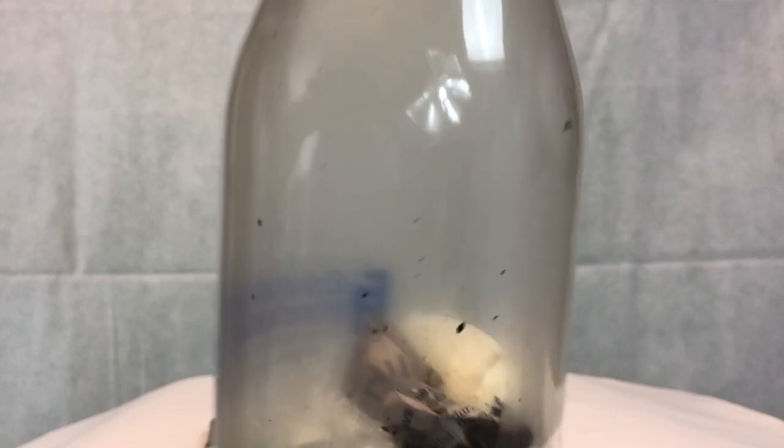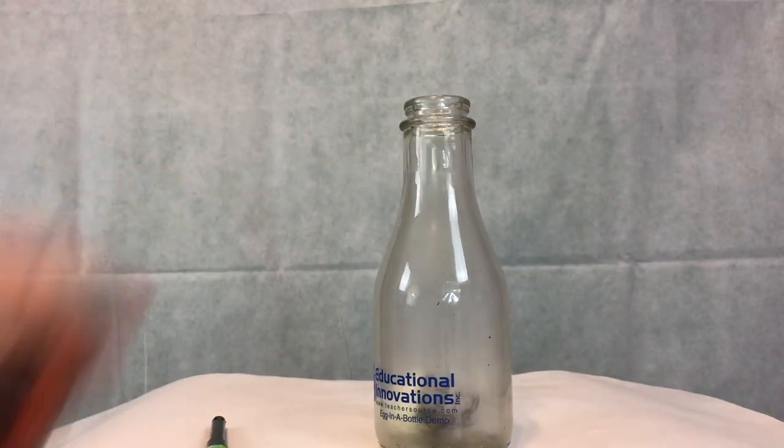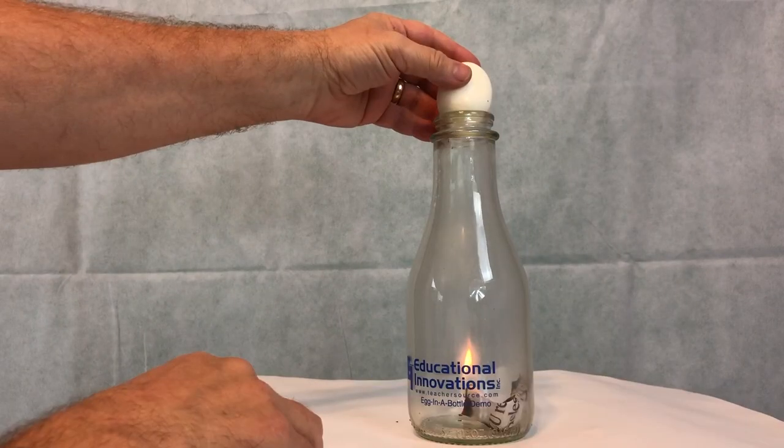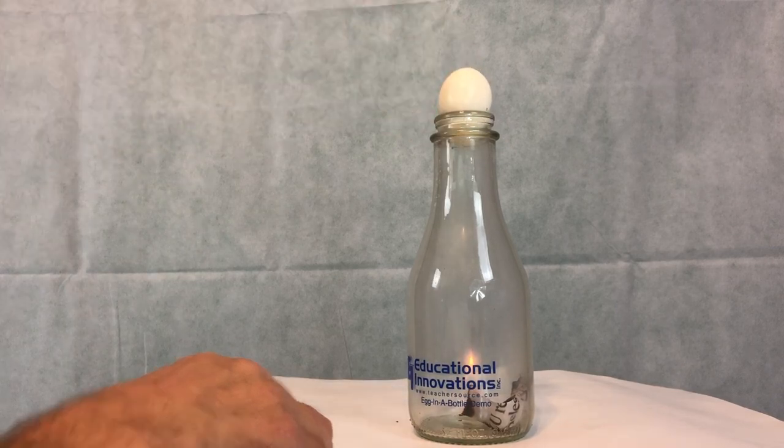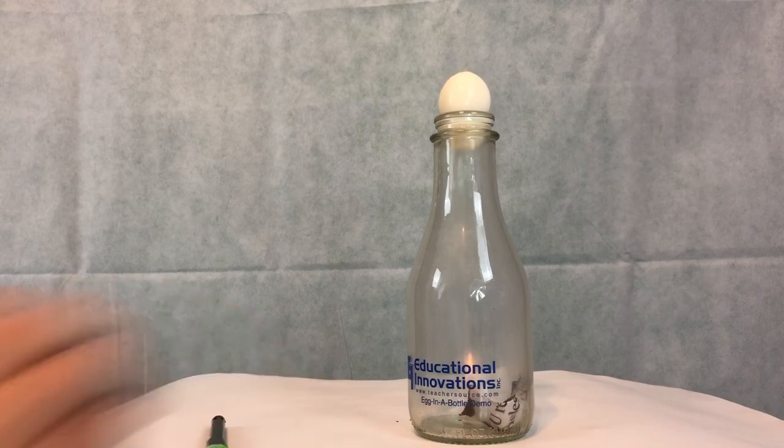Pretty amazing. So I'm going to do it in slow-mo again and explain the science behind it. When the flames inside the bottle become extinguished due to the lack of oxygen, the gas inside the bottle cools. This cooling causes the pressure of the remaining gas inside the bottle to become less than the outside atmospheric pressure.